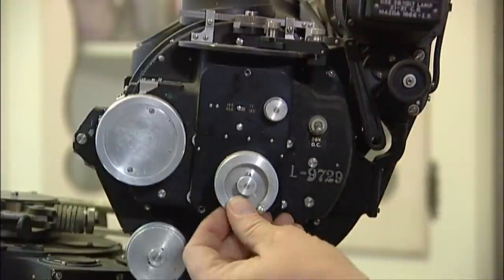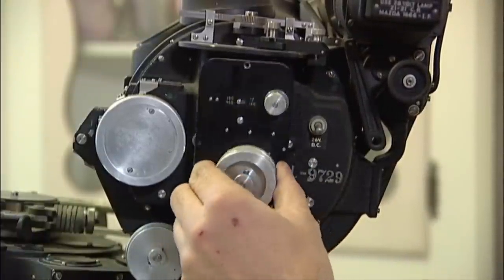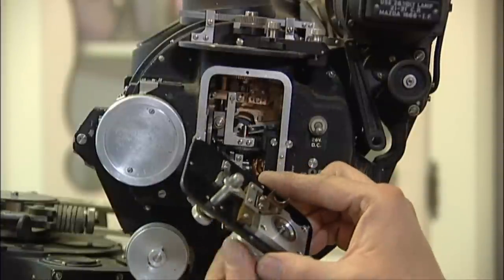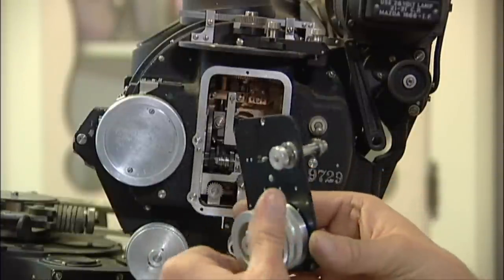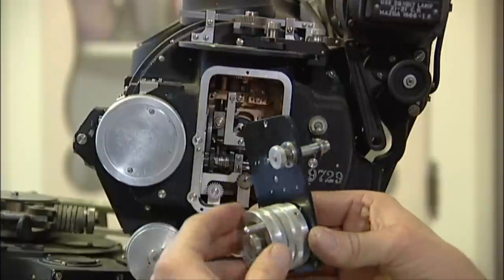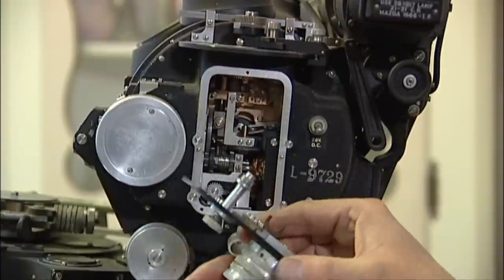There's three flathead screws that come out, and then this pulls off, and you can check for any binding in these little knobs here.